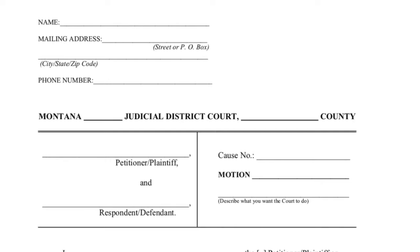Next, fill in the information for the court in which you are filing your documents. Then write in the name of the petitioner and respondent or co-petitioner on the appropriate lines below. Always put the name of the petitioner on the first line and the respondent or co-petitioner on the second line. If there is no respondent or co-petitioner in your case, leave this line blank. Above the title of the document, write in your case or cause number.